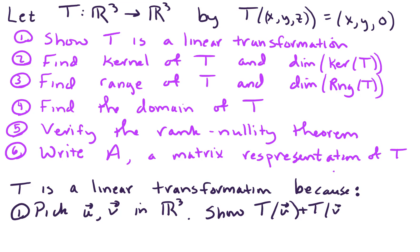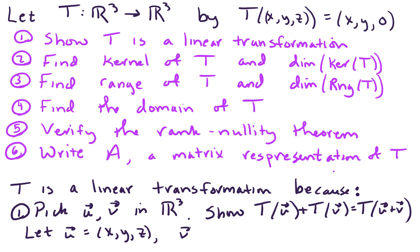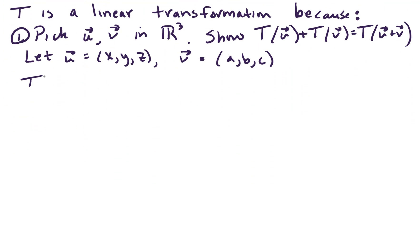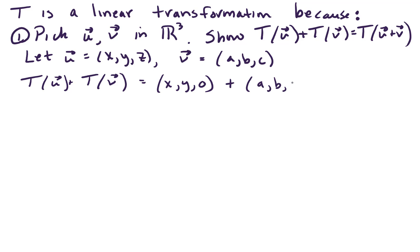That's an easy check, but we do have to go through the computations. Let u be a vector in R3, call it x, y, z. And let v be another vector in R3, call it a, b, c. Now we need to check what T of u plus T of v does. T of u sends that vector to x, y, 0. And T of v sends that vector to a, b, 0. If we add those up, that's x plus a, y plus b, and 0. And that's exactly equal to T of u plus v.